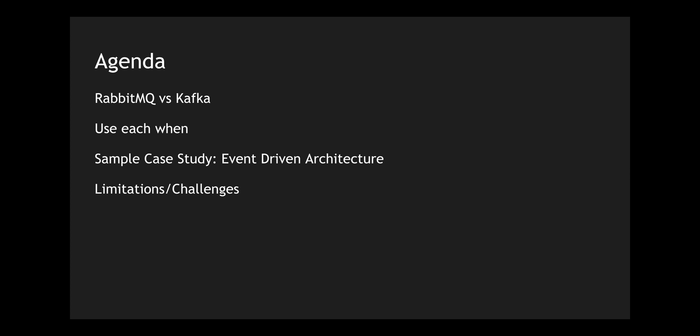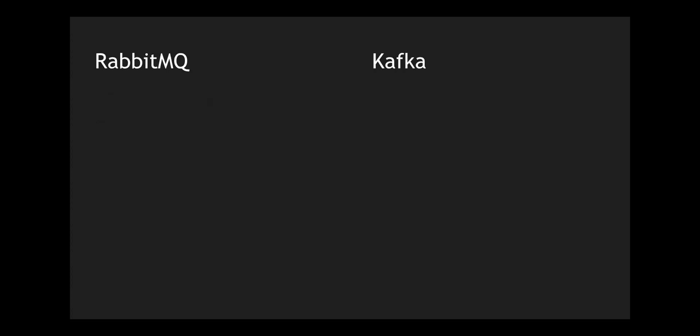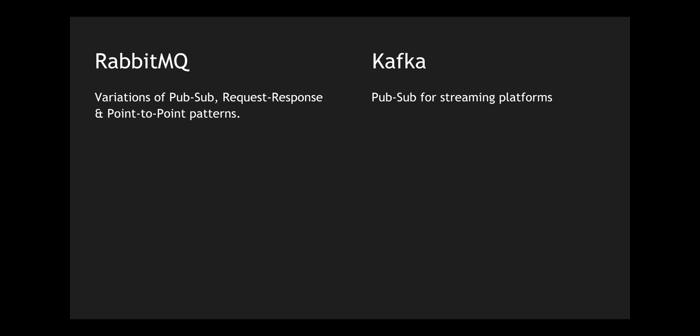So what is RabbitMQ? RabbitMQ is simply a pub-sub kind of platform where you can use it for point-to-point communication and leverage it for a request-response model. Before streaming platforms came into picture, there were only publish and subscriber models, and ActiveMQ and RabbitMQ fell under that particular model. Kafka on the other hand leverages the same publish-subscribe model, however it's generally used for streaming platforms.